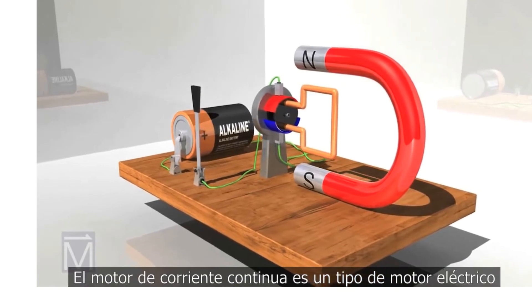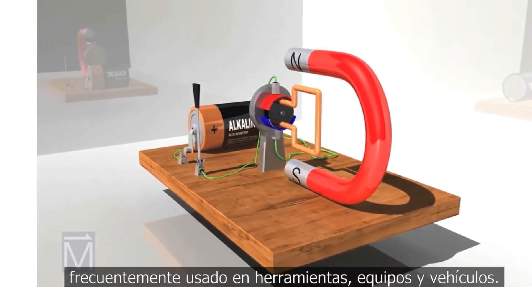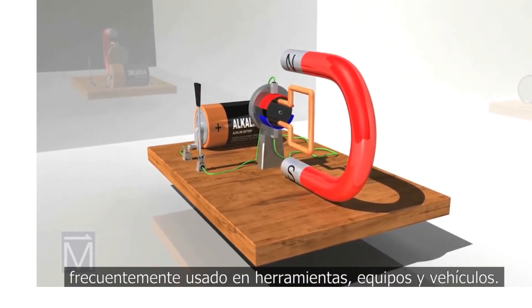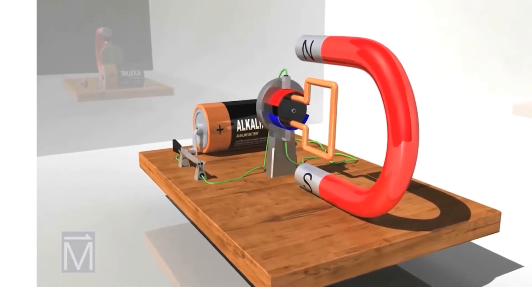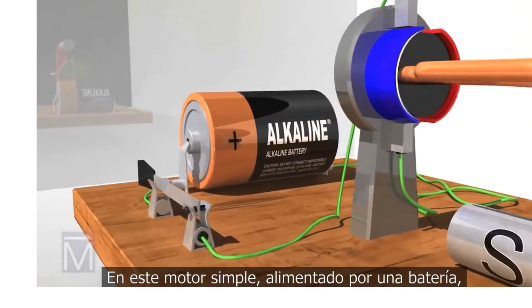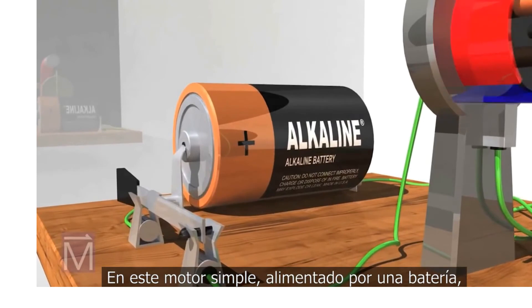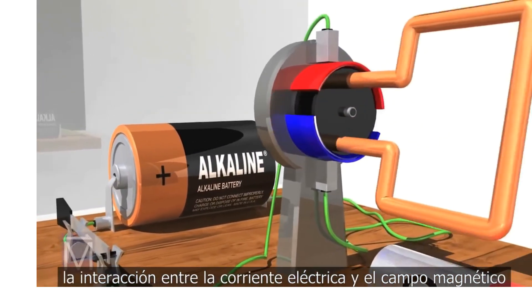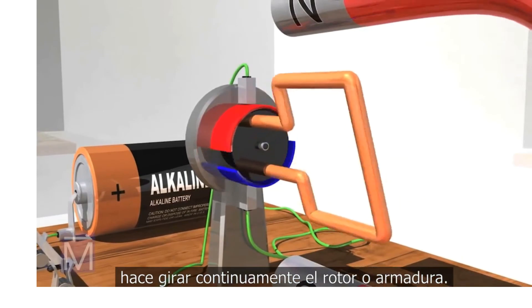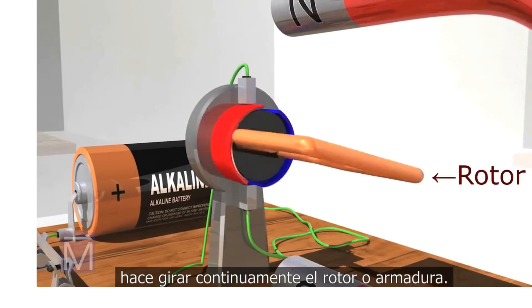DC motors are one type of motor and are often used in toys, appliances, and radio control cars or boats. In this simple motor, powered by a battery, the electrical current and magnetic fields make the motor's armature or rotor rotate continuously.